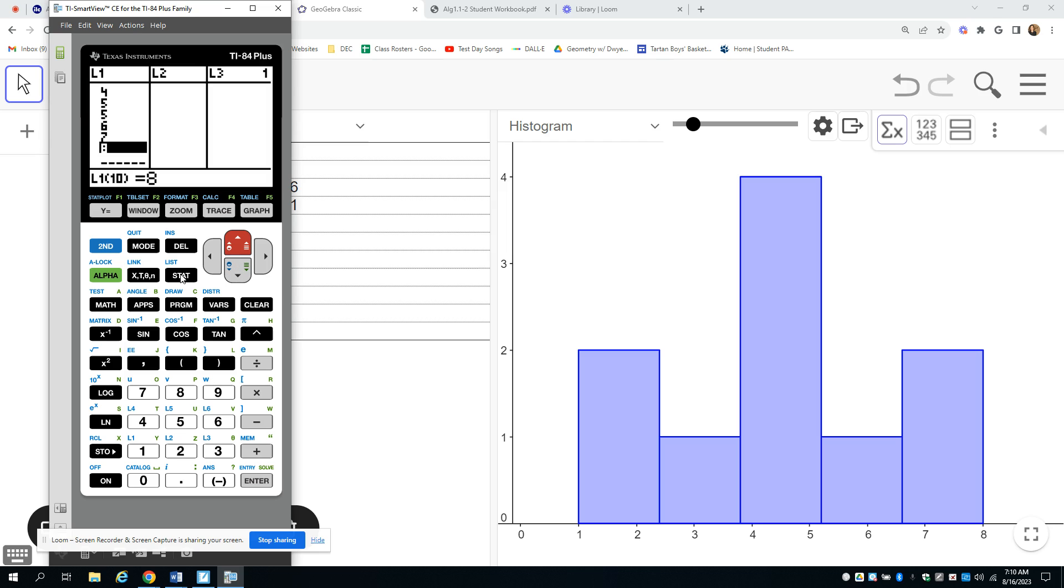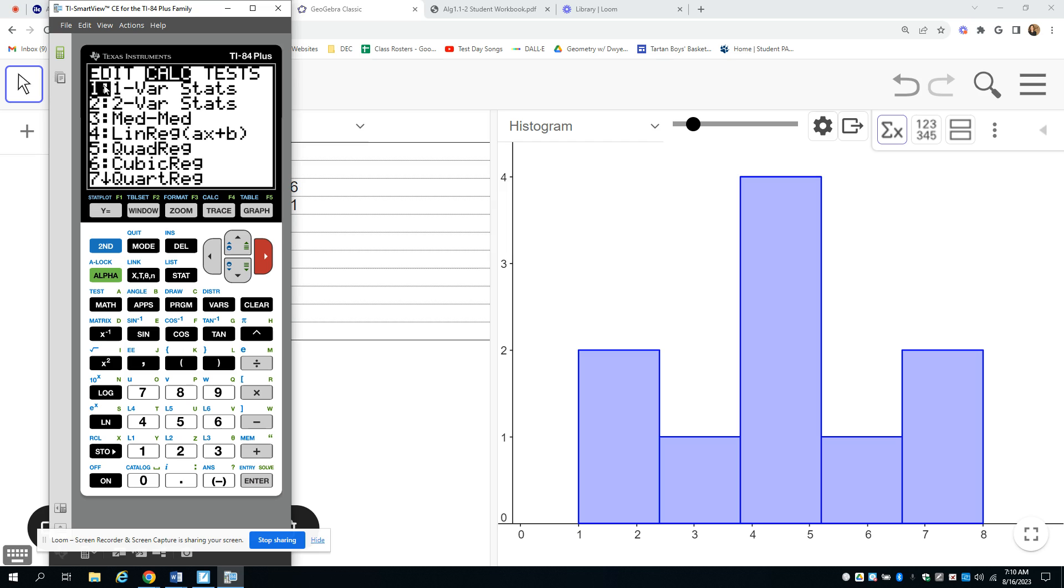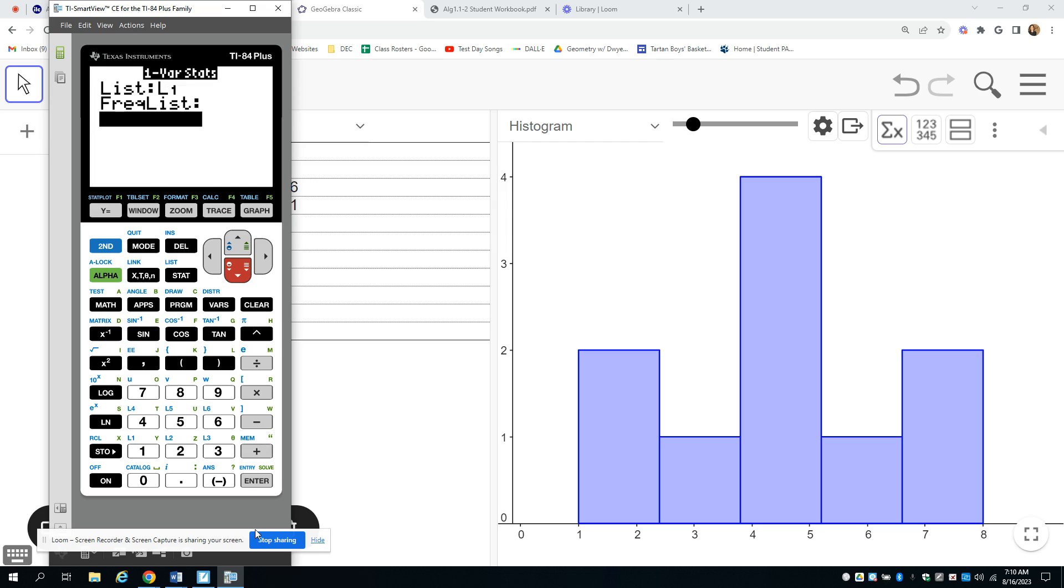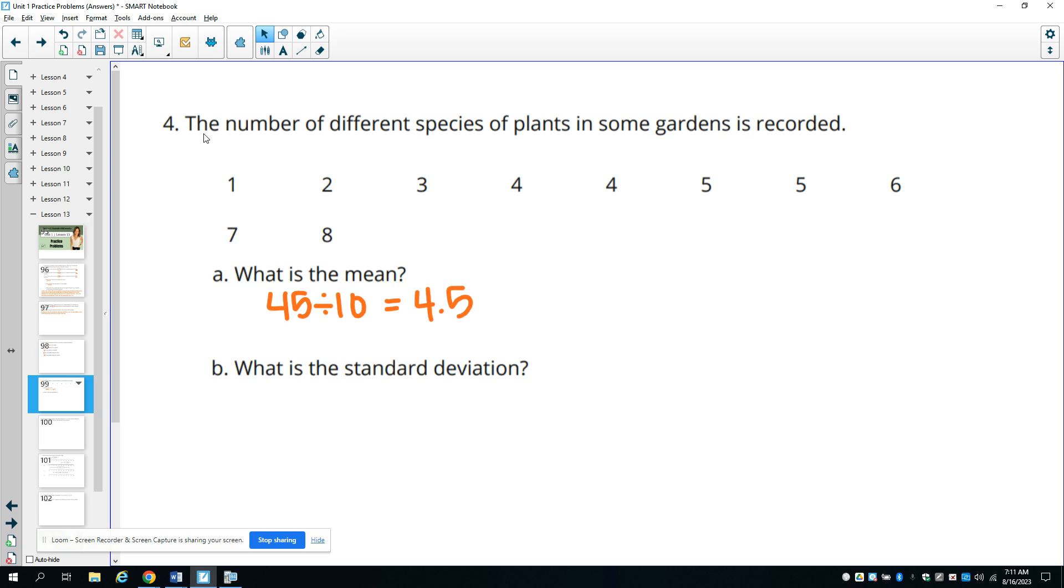So then you're going to go over to, you're going to click stat again. And this time you're going to go over to the calculate menu. And you're going to calculate the one variable stats here. And then you might just push enter. Otherwise, you can push enter a bunch of times, get down to this calculate and hit enter. Then you'll see this number at the bottom here with this little lowercase sigma x. That's your standard deviation. And your mean is this top one that has this x with the bar over it. So in stats, they call that x bar, but that's for the mean. So our mean is 4.5. Our standard deviation is 2.06. So that's two different ways that you can calculate each of those depending on what you have access to.